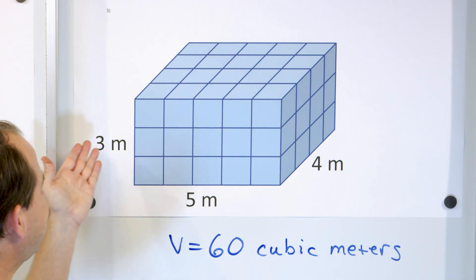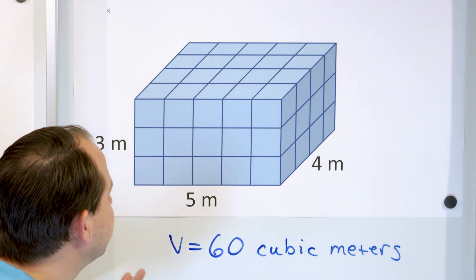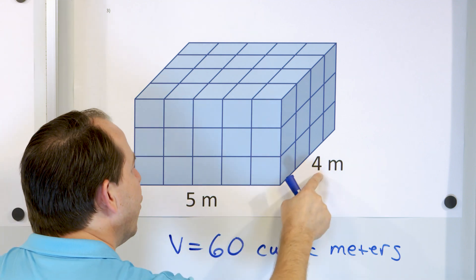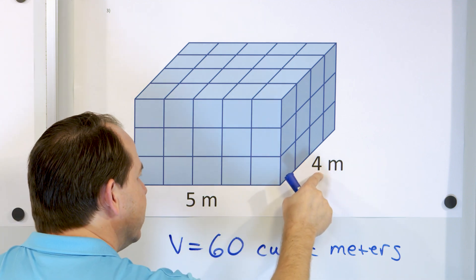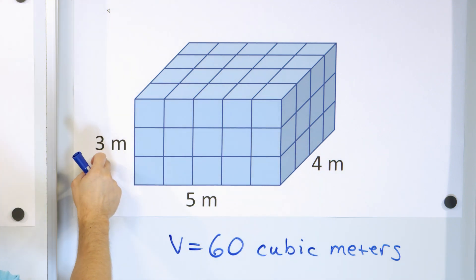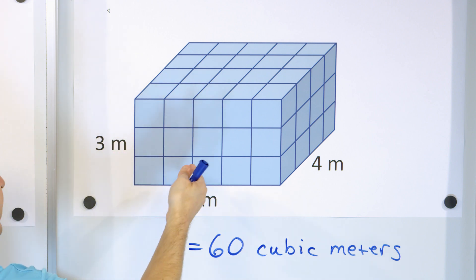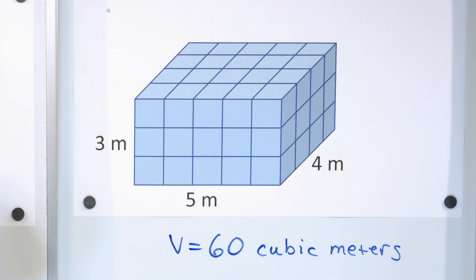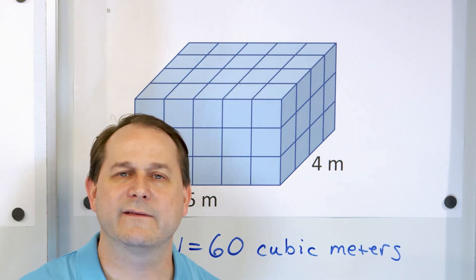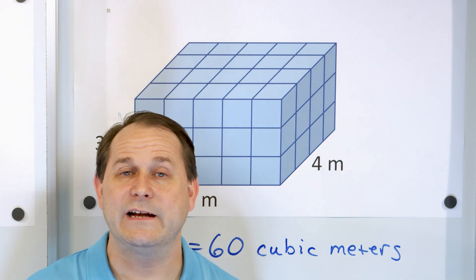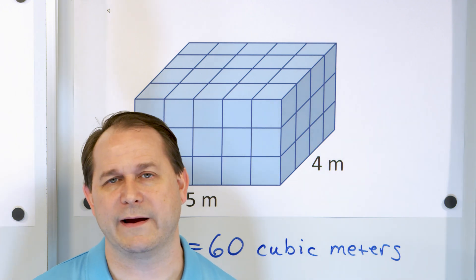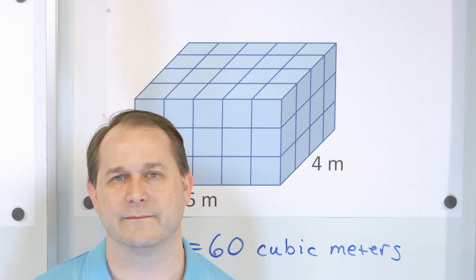Let's verify by calculating: five times four is 20, and 20 times three is 60. So multiplying length times width times height again gives us the volume of 60 cubic meters. Let's take this down and do one more example.